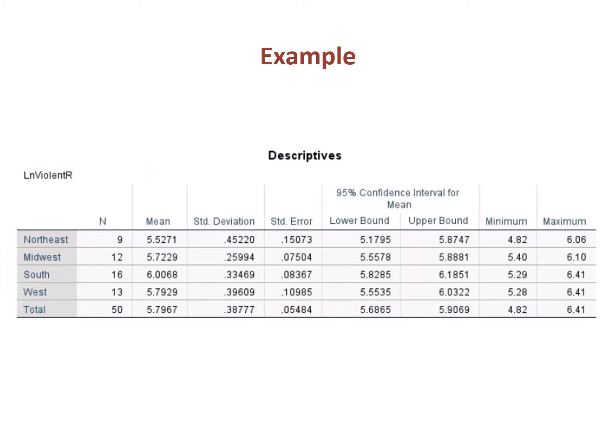For our example, we are going to look at state-level crime rates. You see the crime rates here in the mean column. That is the natural log of the violent crime rate. Natural log was taken because crime rates are skewed to the right. If you saw the video on the independent samples t-test, there the question was: are crime rates higher in the south than in other parts of the country? And that was set up as a two-category variable — you were either in the south or in one of the other regions, all combined. Now what we're going to do is look at the same question, only with each region assigned to its own category.